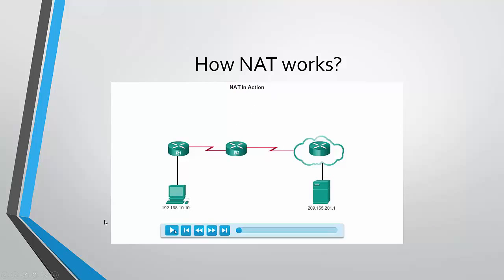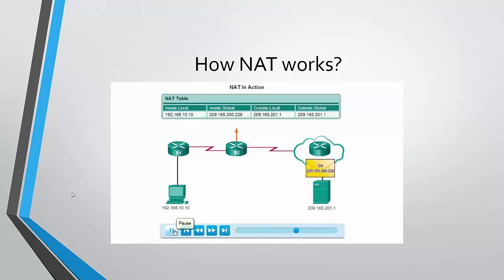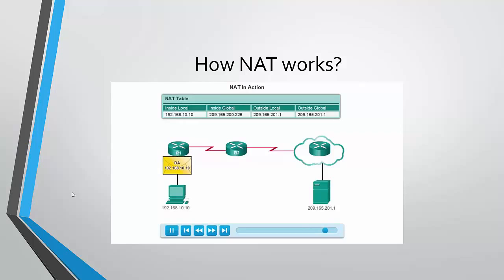Here is a quick overview of how NAT works. PC1 sends a packet with a private address which reaches R2. R2 checks its NAT table and assigns a public address so the packet can go through the internet. The web server answers to the public address and sends it back. The router checks the public address and translates it to a private one so the packet can reach the PC that sent it.